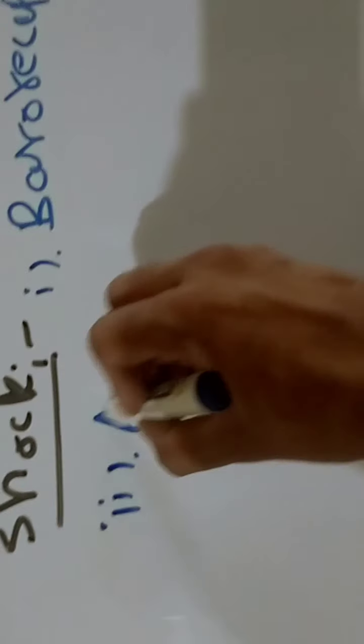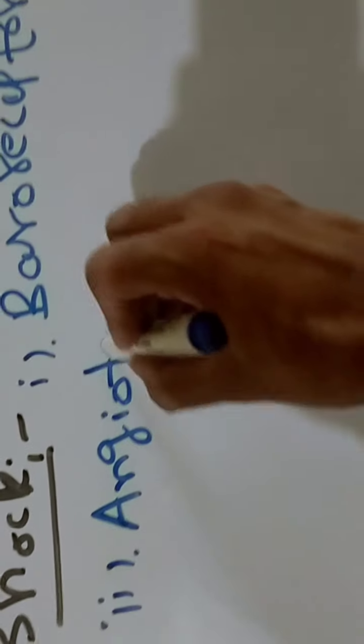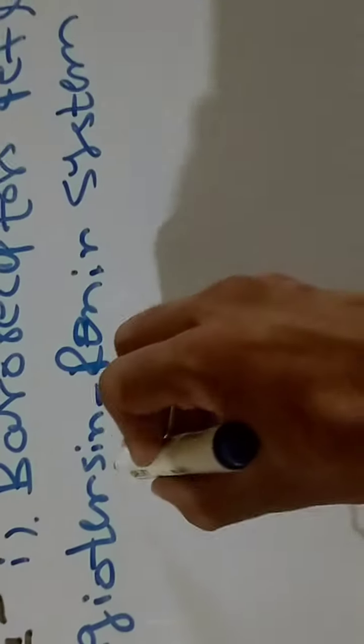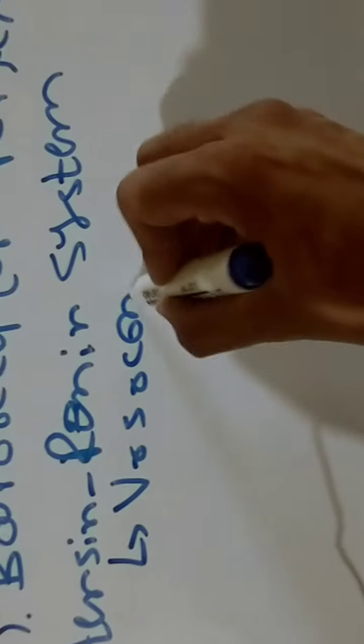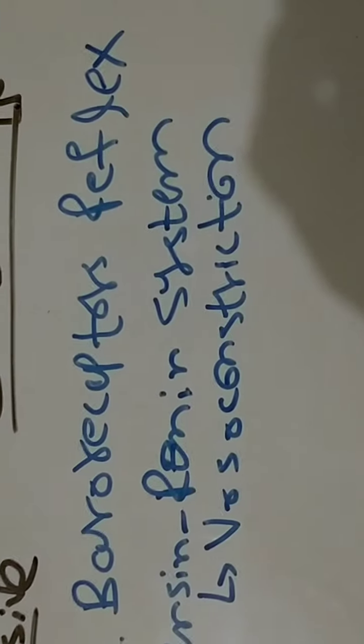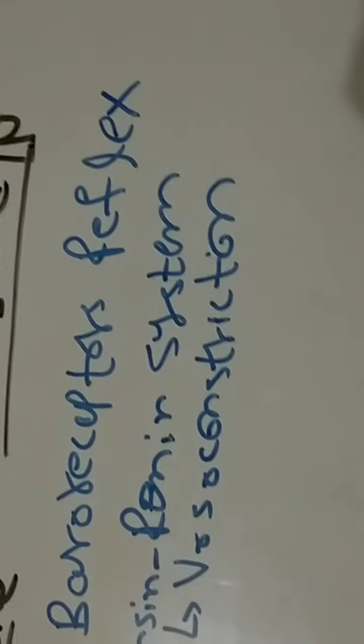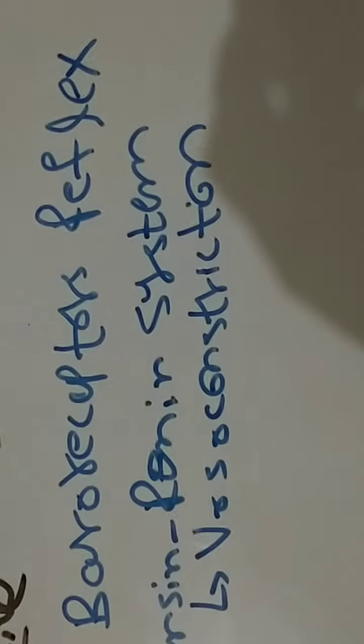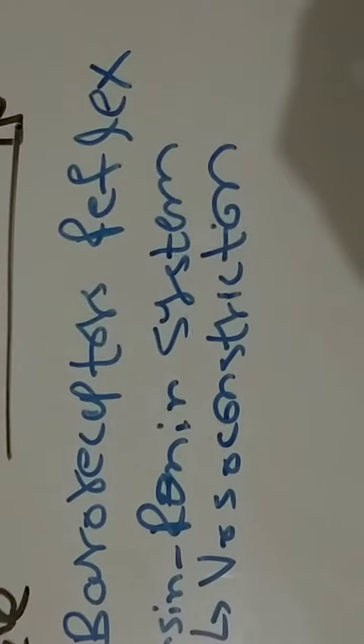Number two is the angiotensin-renin system, which is activated. The angiotensin-renin system causes extreme vasoconstriction in the body. The effect of this vasoconstriction is that more blood supply is directed to the heart and brain, which are the vital organs.